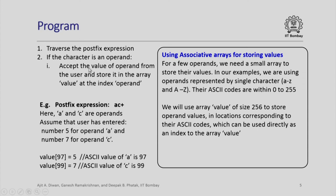Now let us look at the case where the character is an operand. We have to accept the value of the operand from the user and store it in the array called value. Here we do an interesting thing — we use associative arrays for storing values. Those who have done the CS101X course from IIT Bombay may recall using an associative array in the digital image processing example for calculating histograms.